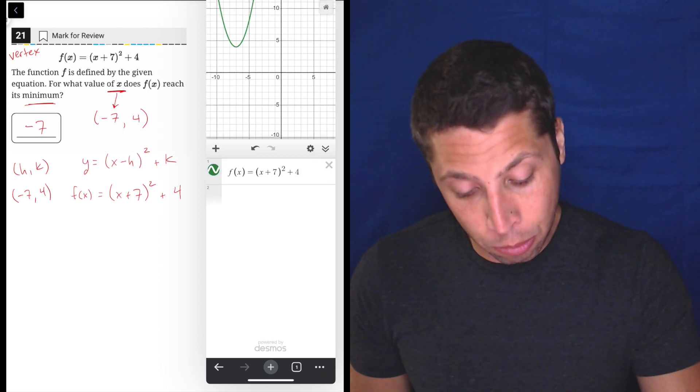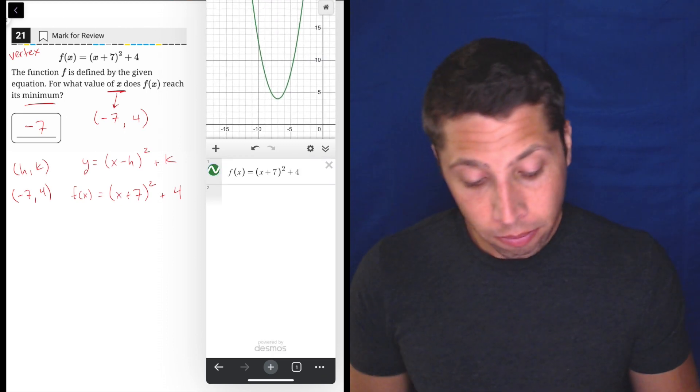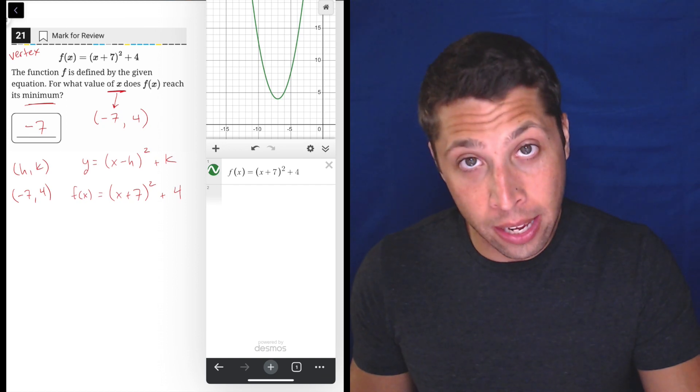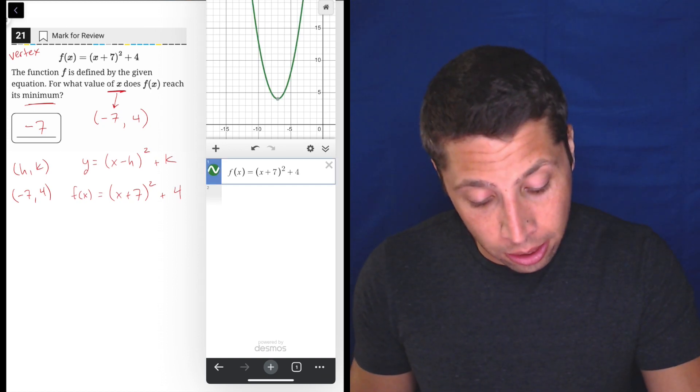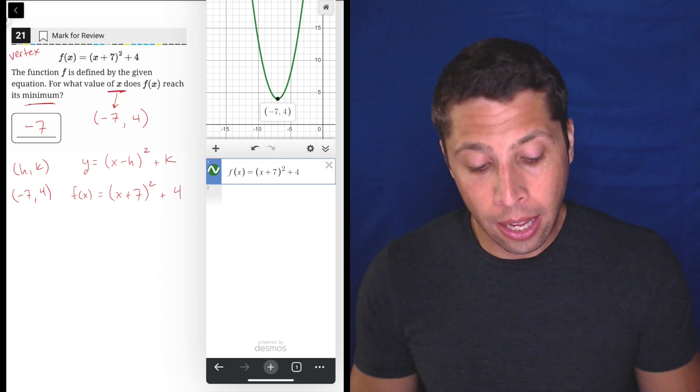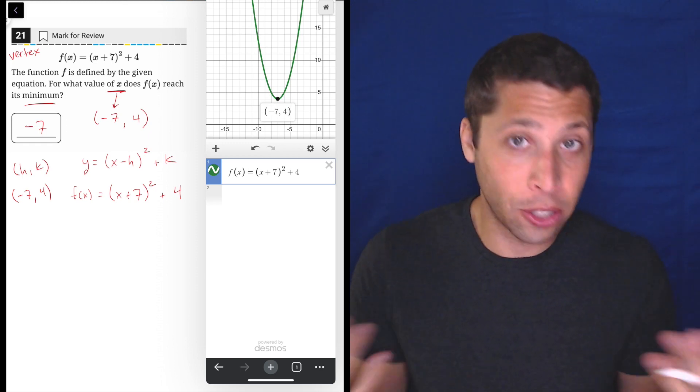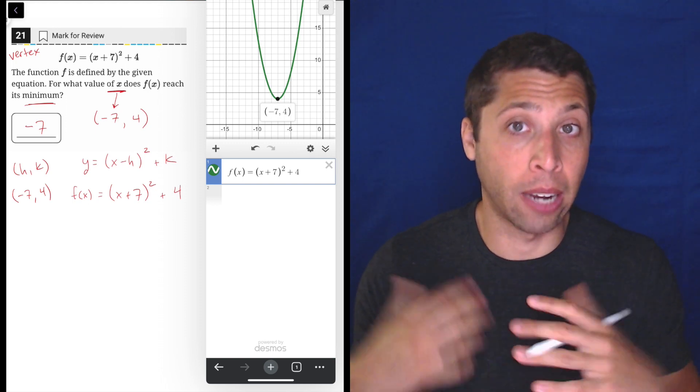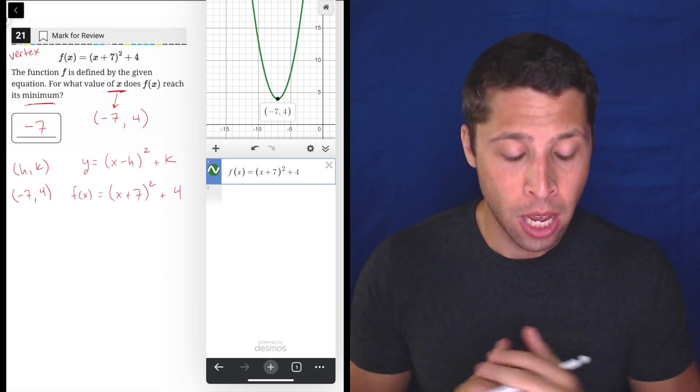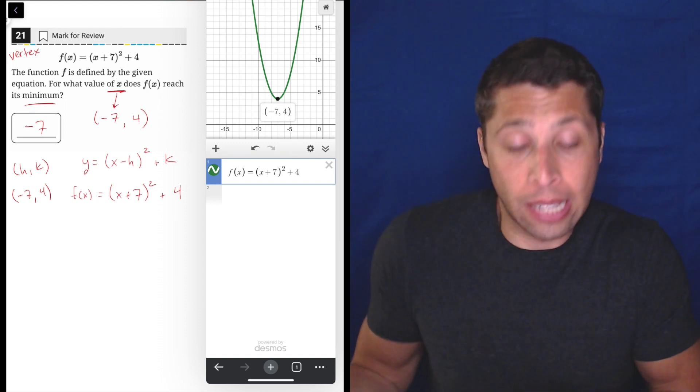And there we have our parabola. Let's move it into the center of the frame here. And you can see the vertex is also going to be something that the Desmos calculator lets us highlight easily. X and y-intercepts, intersection points, and vertices, those are going to be things that you can just tap, usually. So there it is, negative seven, four, exactly what we said.